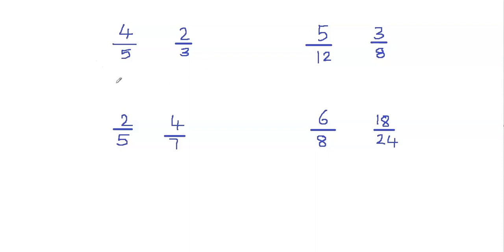Cross multiplication method is very simple. All you need to do is multiply the denominator of one fraction with the numerator of the other fraction. So what I mean by that is you multiply the bottom number of this fraction with the top number of this fraction. The bottom number of this fraction is 5, so we're going to multiply 5 by the top number of the other fraction — so we're going to multiply 5 and 2.